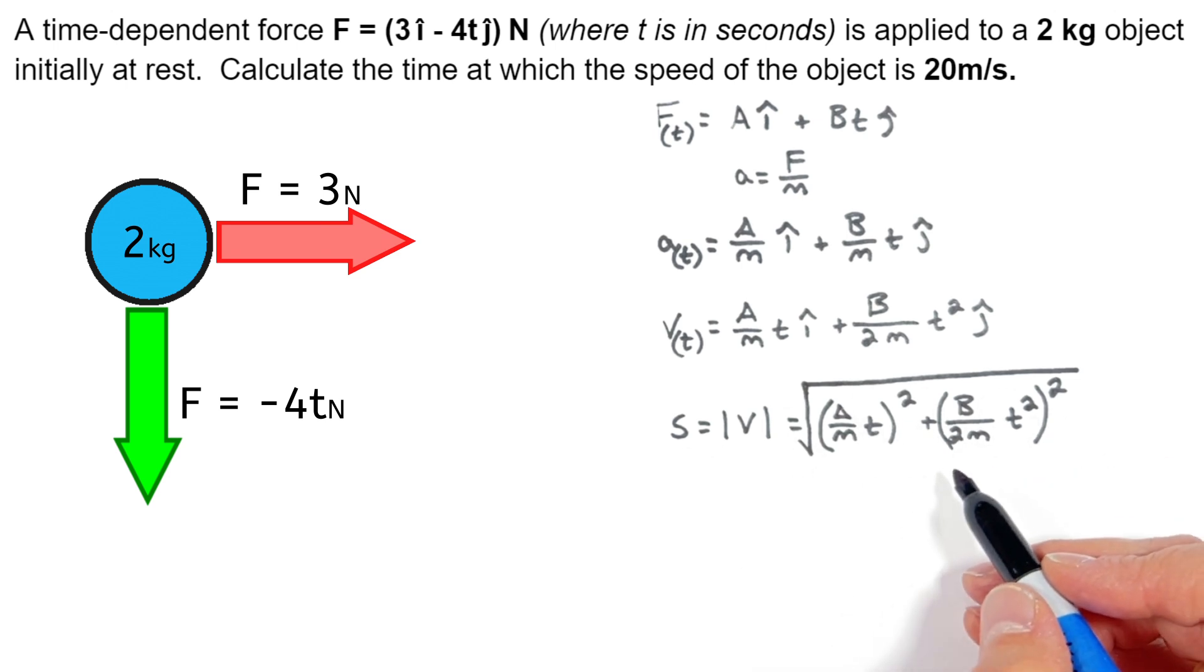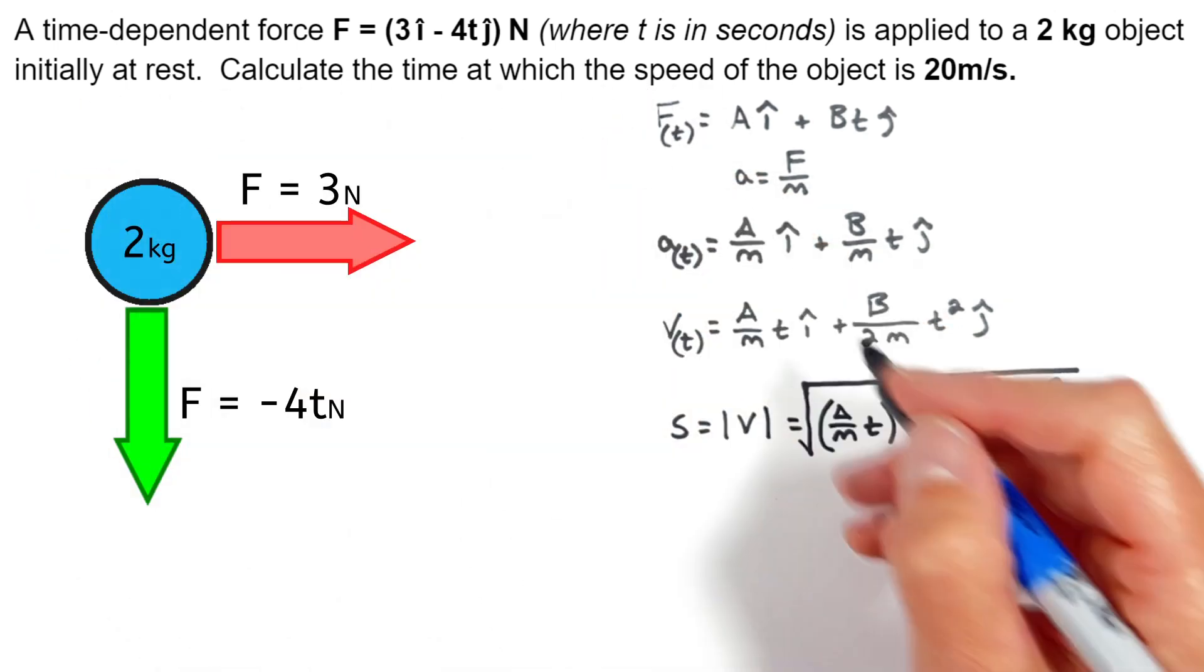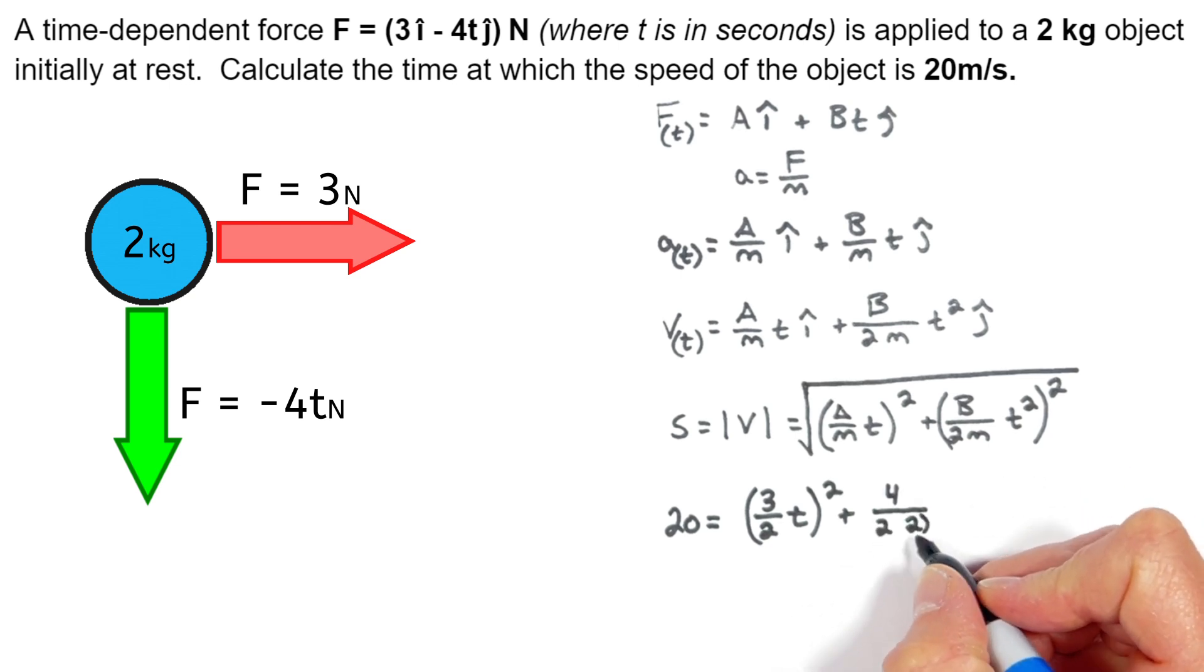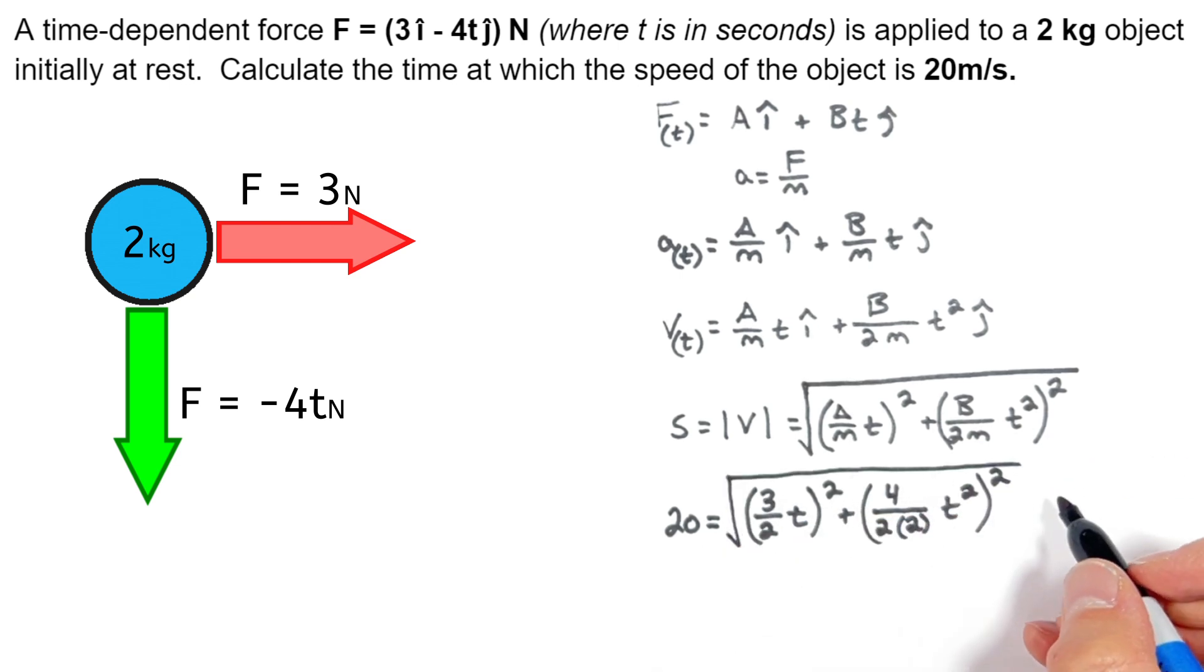So this is a very general equation we can use. And going back to our original problem, I'm going to plug the numbers in the problem into our equation, leaving us with this function. Now I don't really feel like doing the algebra for this, but if you do something like just toss this into Desmos, you'll find the time in this case is 4.35 seconds.